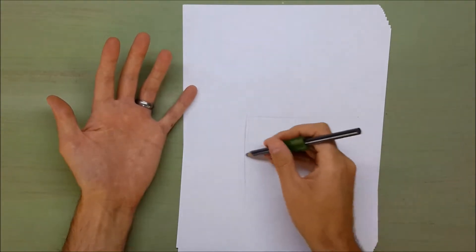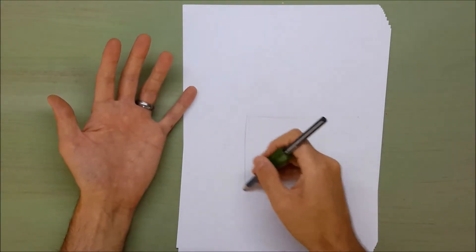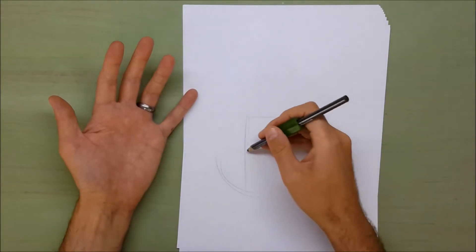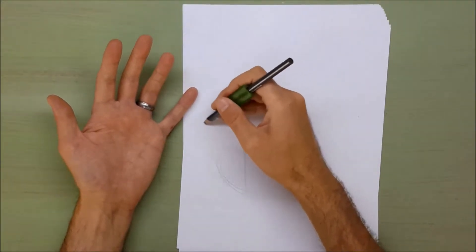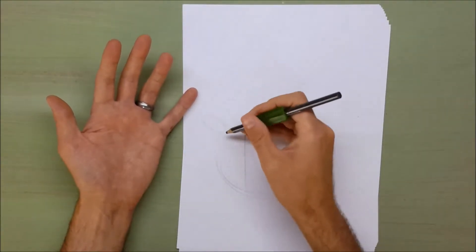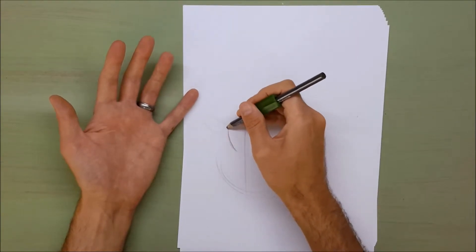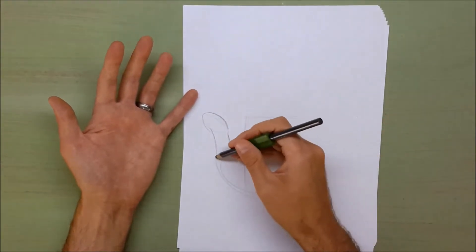I've got a rectangle for the palm. About halfway down, I'm going to put an oval for the base of the thumb and another oval for the top of the thumb, and I'm just going to use some curved lines to connect those.